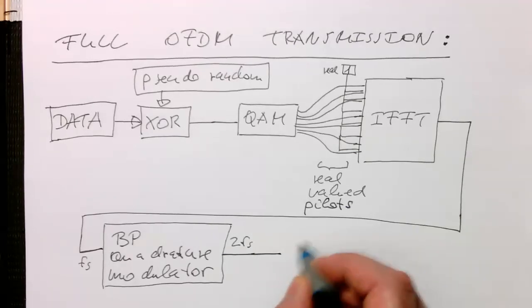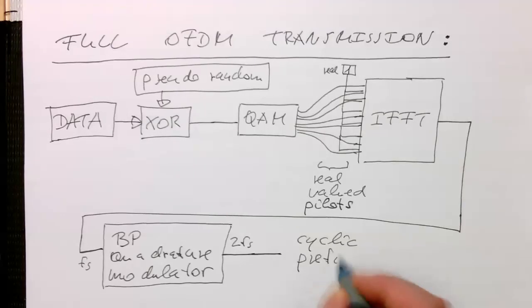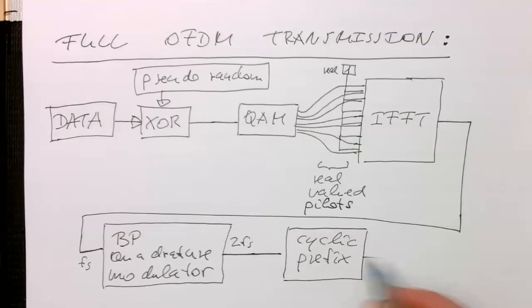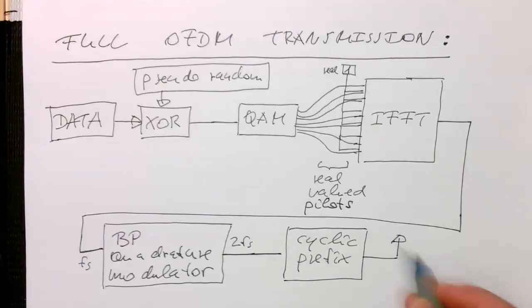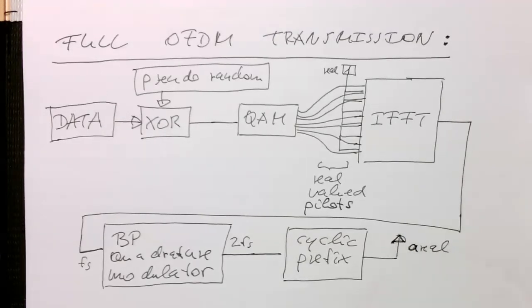We add the cyclic prefix, and then this is sent to our antenna or mixed up further higher. Let's just assume that's our antenna here.